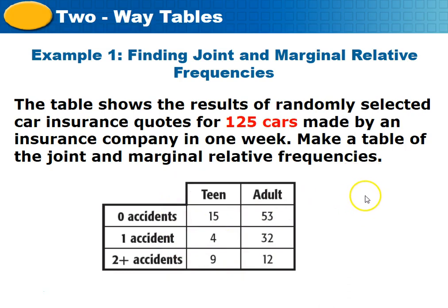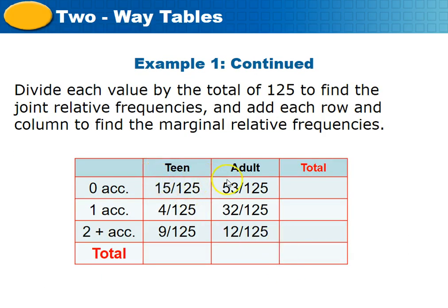The first step is to make a table of joint and marginal relative frequencies. We divide each value by 125: 15 by 125, 53 by 125, 4 by 125, 32 by 125, 9 by 125, and 12 by 125. Go ahead and do that, then come back.